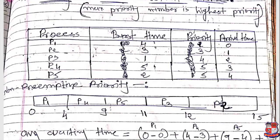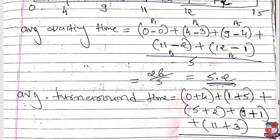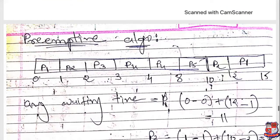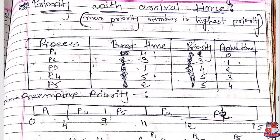At time 1, we check which processes have arrival time equal to 1 or less. P1 and P2 have arrived. P1 has priority 2 and P2 has priority 3. Since we consider the largest priority number as highest priority, P2 is selected. We execute P2 for one second, so from 1 to 2, with remaining burst time of P2 becoming 2.